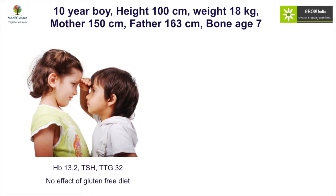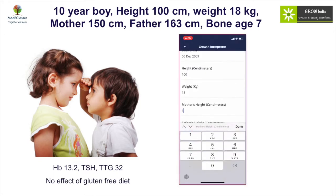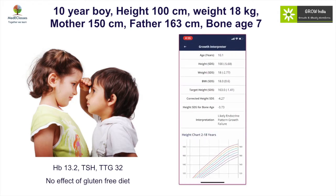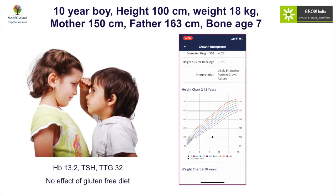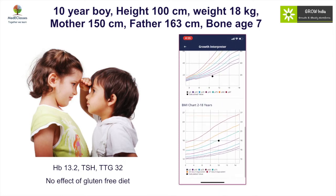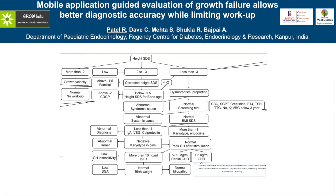If we interpret this data in the growth interpreter — putting in height, weight, and bone age — we see there is a significant difference in height standard deviation for bone age, and it is the height which is more affected. This gives an interpretation of an endocrine pattern growth retardation. Just by putting in these basic data we can get guidance on how to evaluate, and in this case it turned out to be growth hormone deficiency with low growth hormone on stimulation testing.